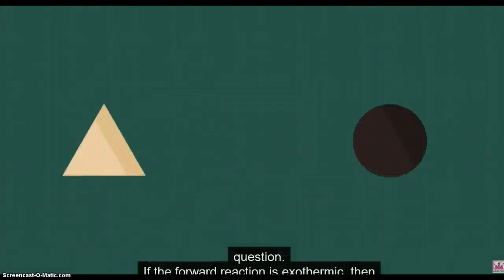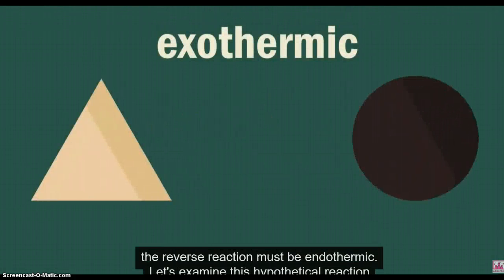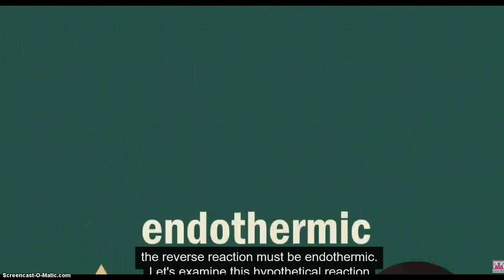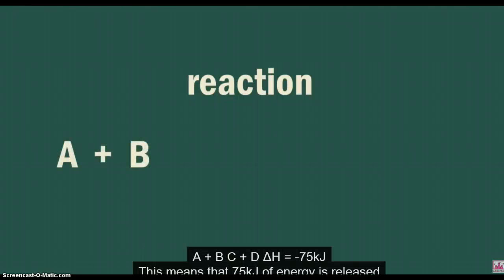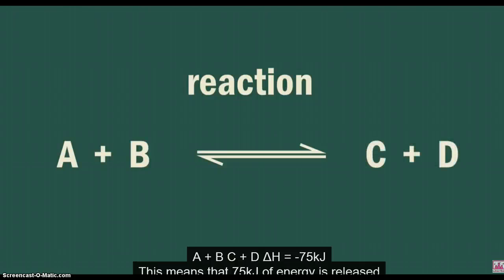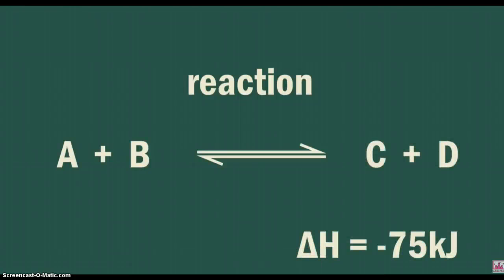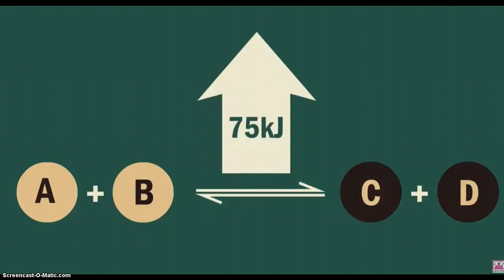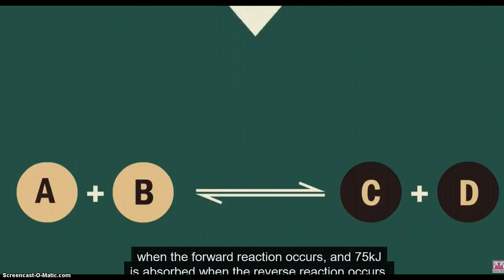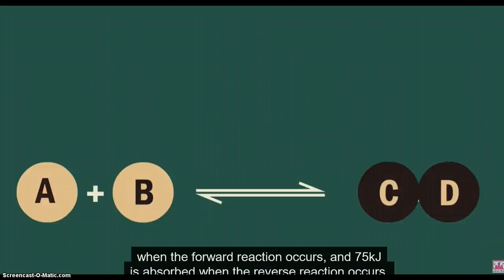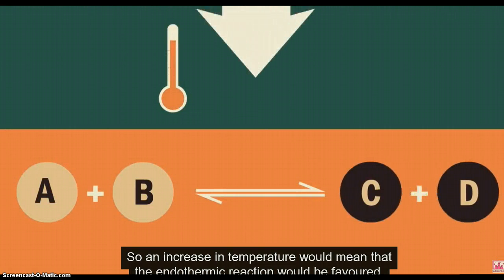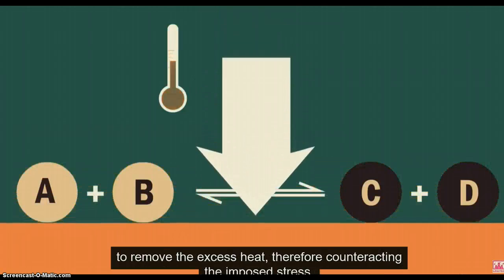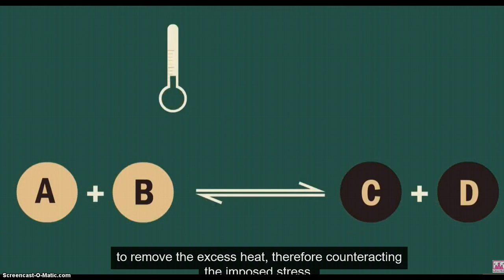If the forward reaction is exothermic, then the reverse reaction must be endothermic. Let's examine this hypothetical reaction where reactant A reacts with reactant B to produce product C and product D with a change in heat of -75 kJ. This means that when the forward reaction occurs, 75 kJ of energy is released, and 75 kJ is absorbed when the reverse reaction occurs. So an increase in temperature would favor the endothermic reaction to remove the excess heat, therefore counteracting the imposed stress.